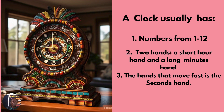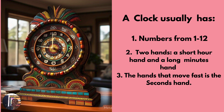A clock usually has: number one, numbers from 1 to 12; number two, two hands — a short hour hand and a long minute hand; and number three, the hand that moves fast is the second hand.